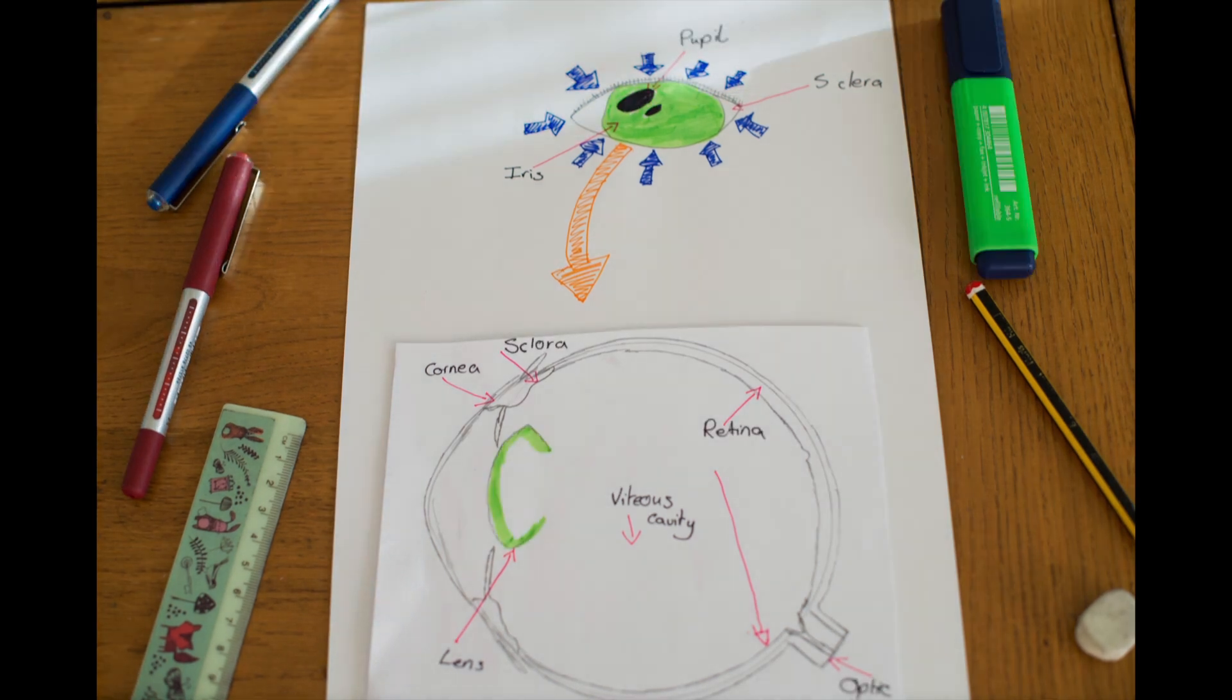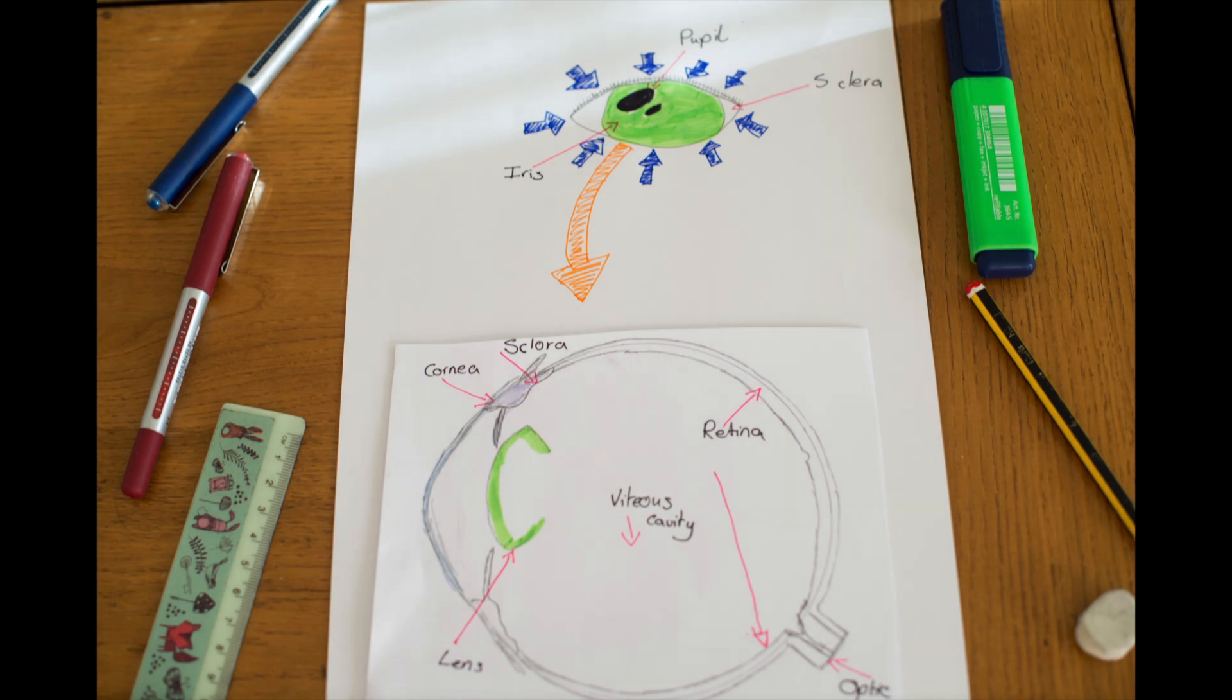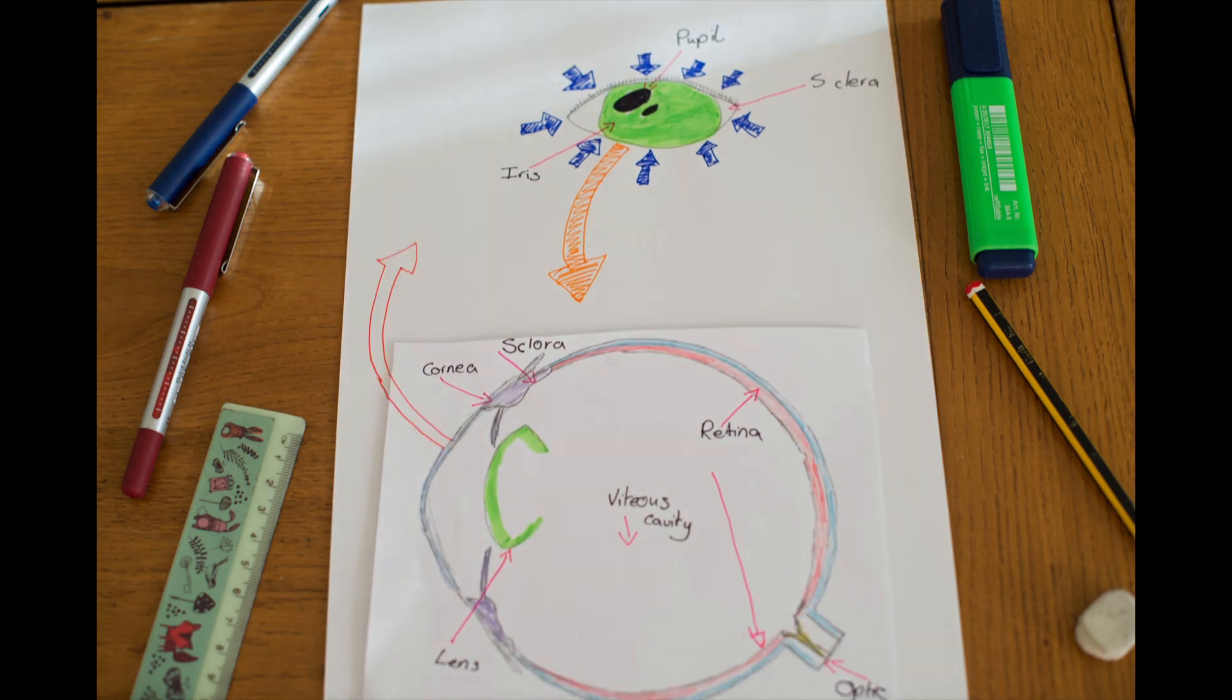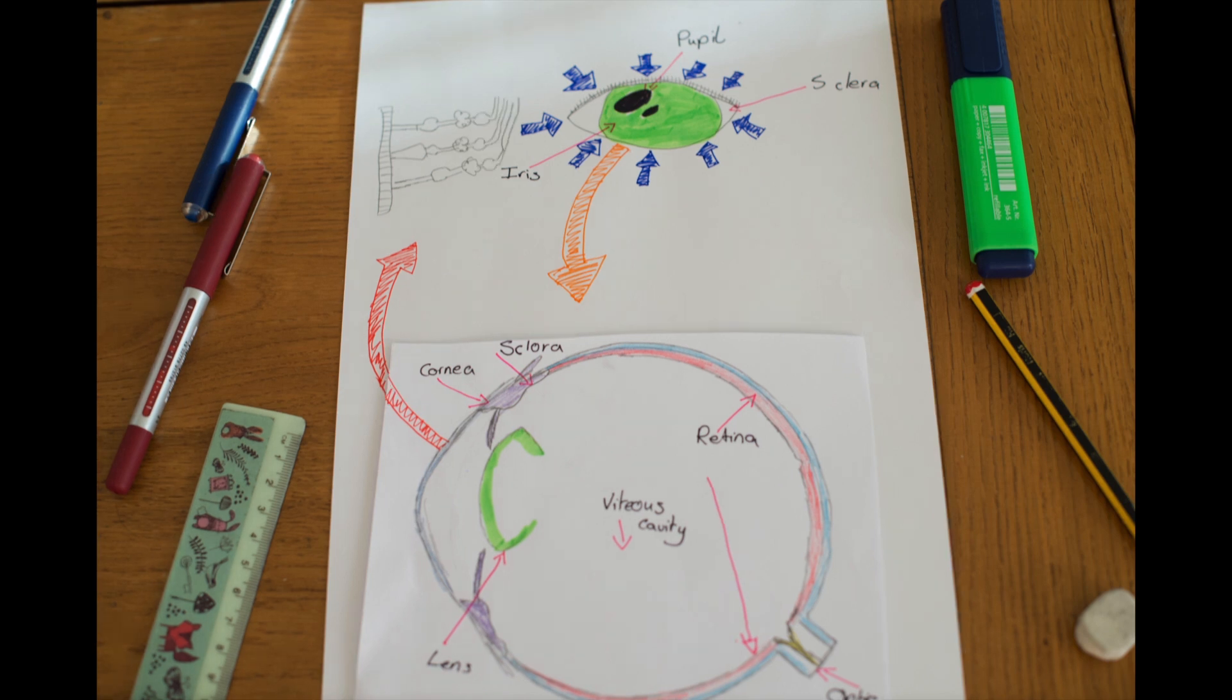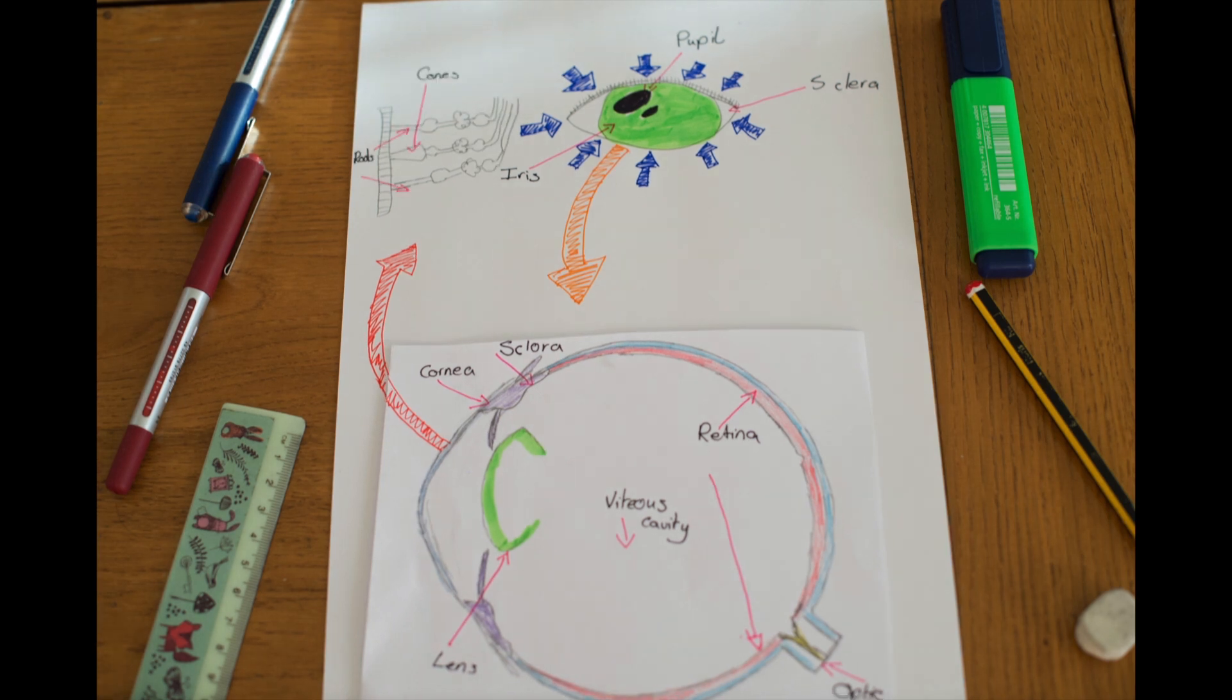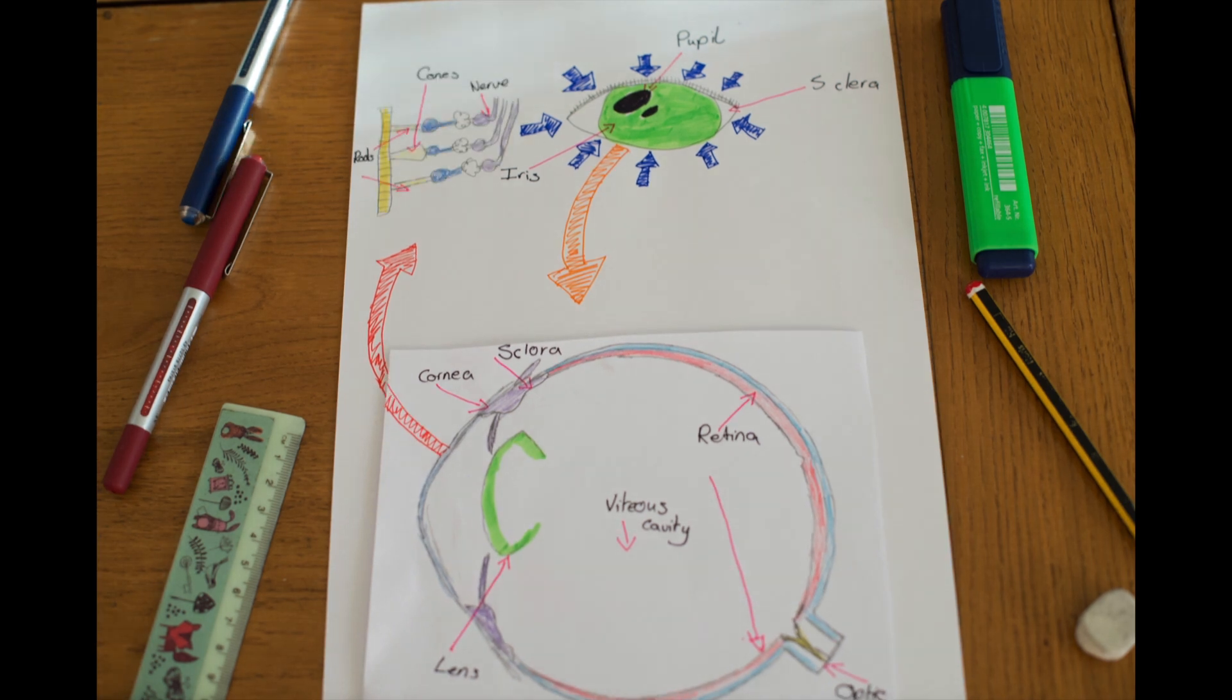Our eye contains a pupil, iris, sclera, vitreous cavity, lens, cornea, retina, and optic nerve. In the retina there are rods and cones. The cones deal with color - they come in three different types: red, green, and blue. Everyone has different ratios of cones for each color, so we see different shades of everything.